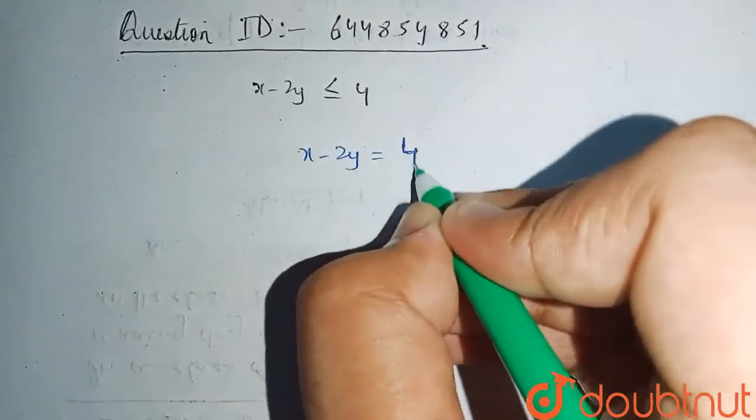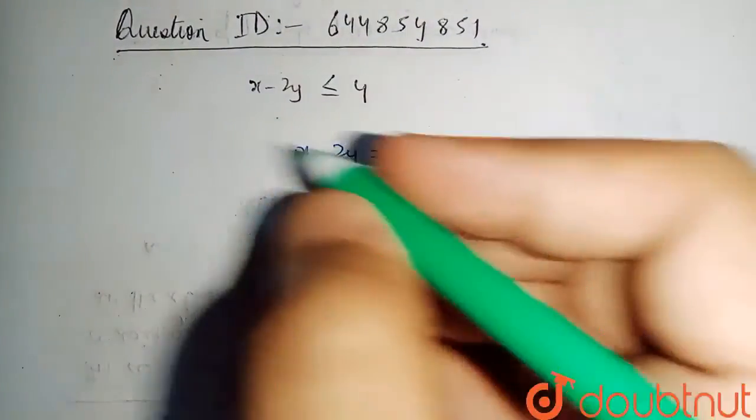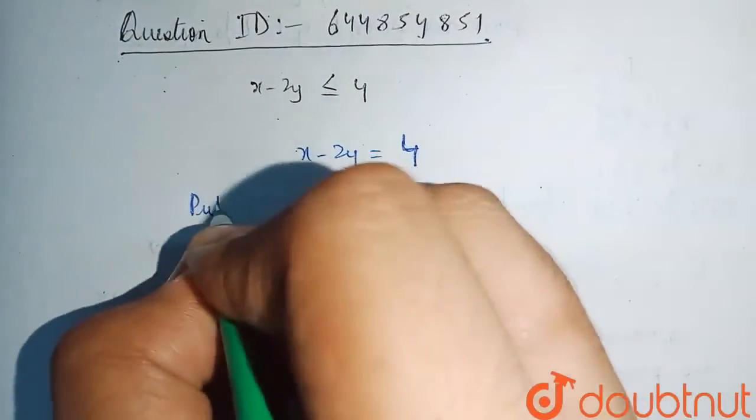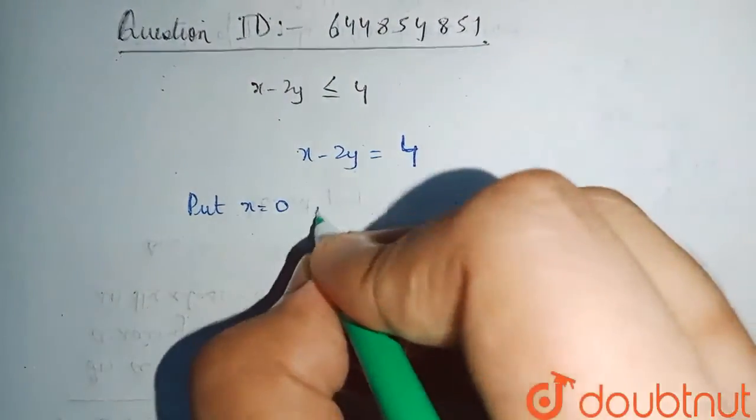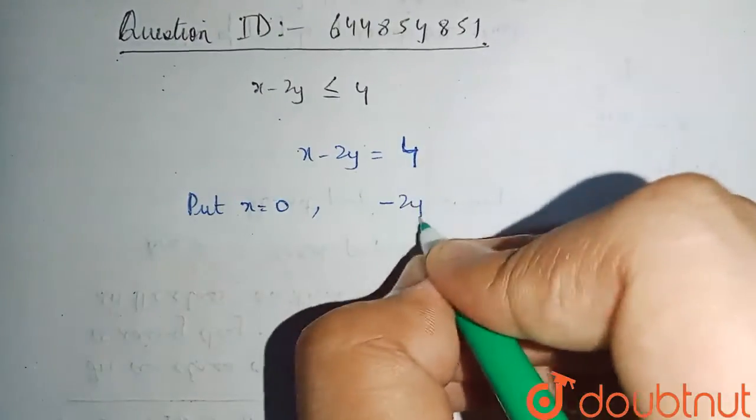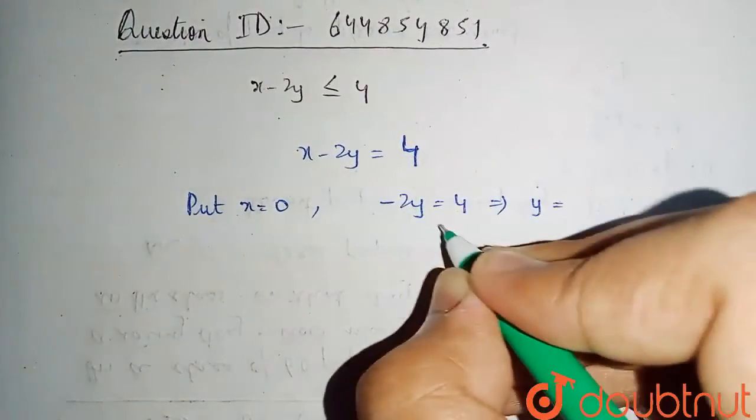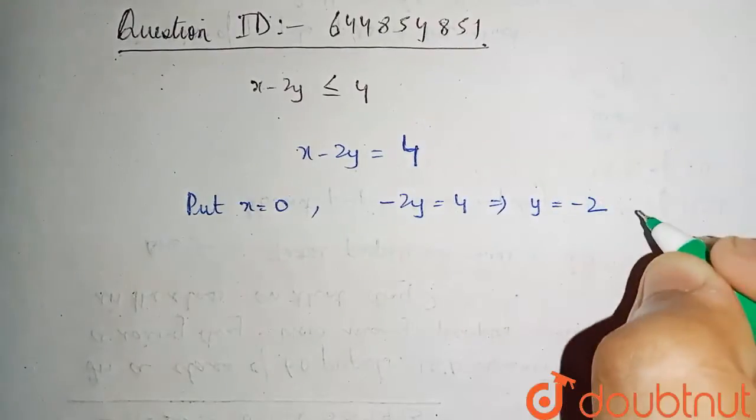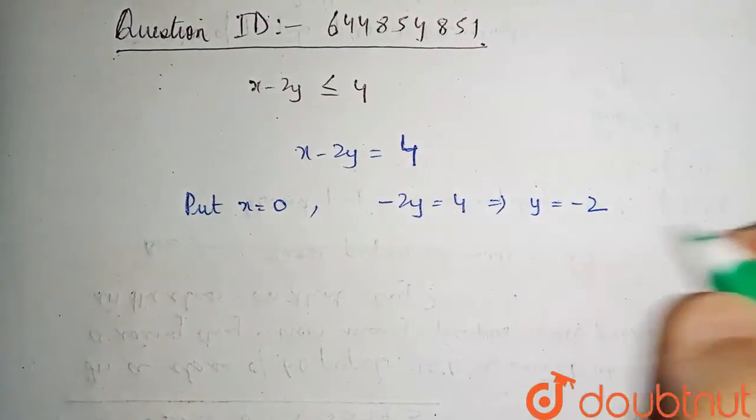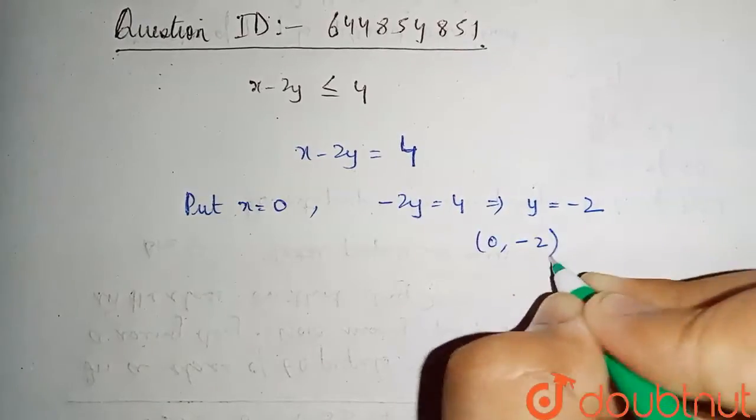Now finding the points where it interacts with the coordinates, so we first put x equals to 0. So on putting x equals to 0, we get minus 2y equals to 4 or y equals to minus 2. So the point we get is 0, minus 2.